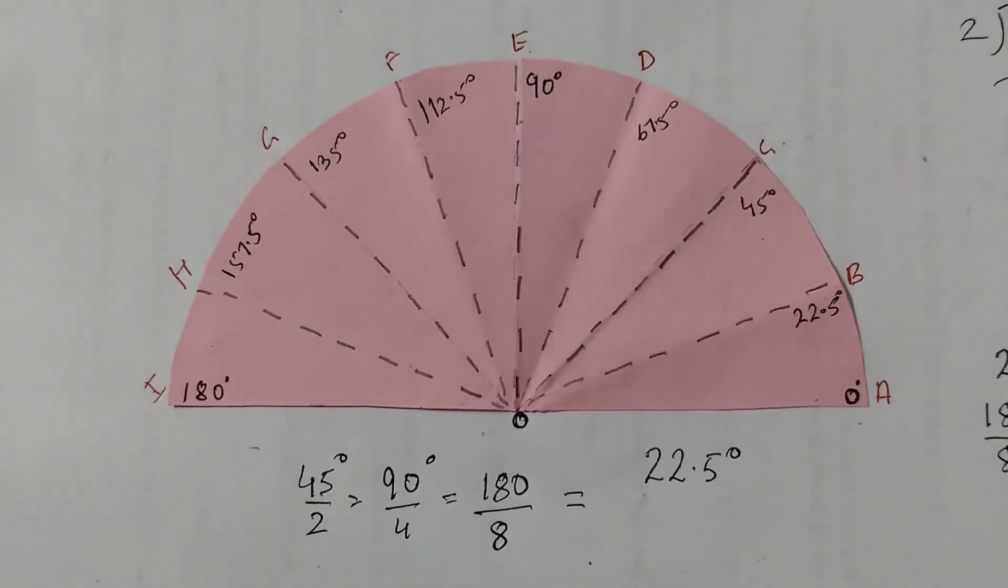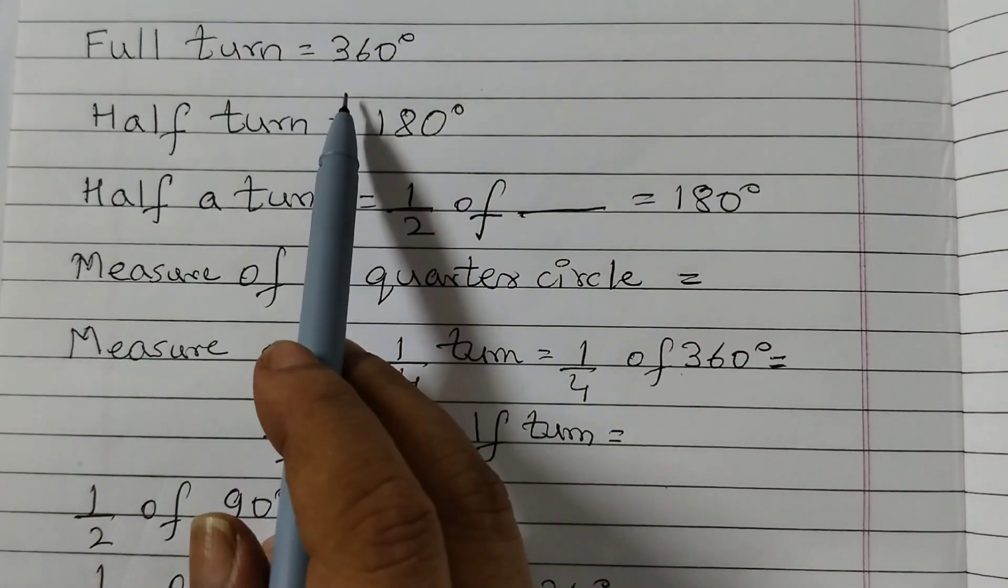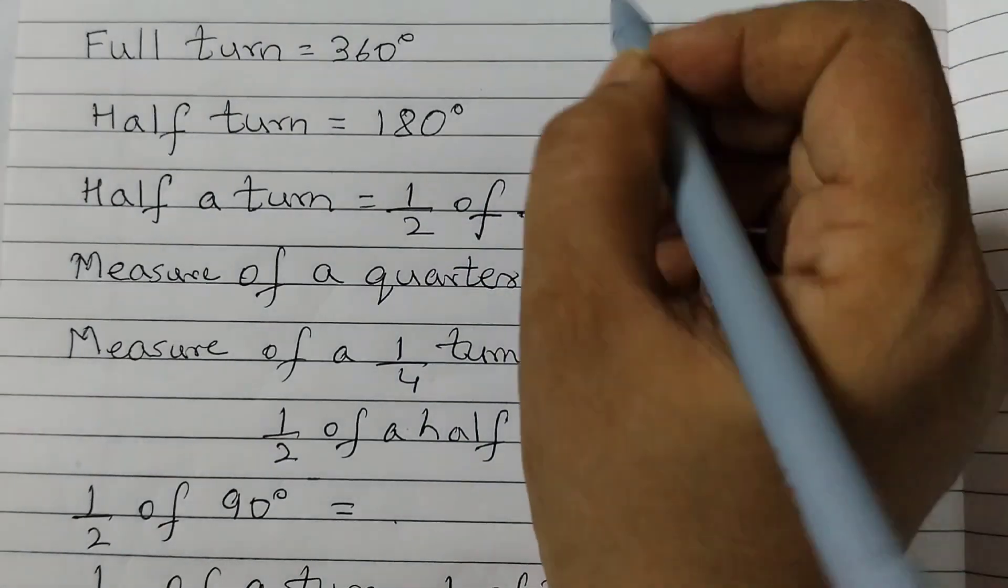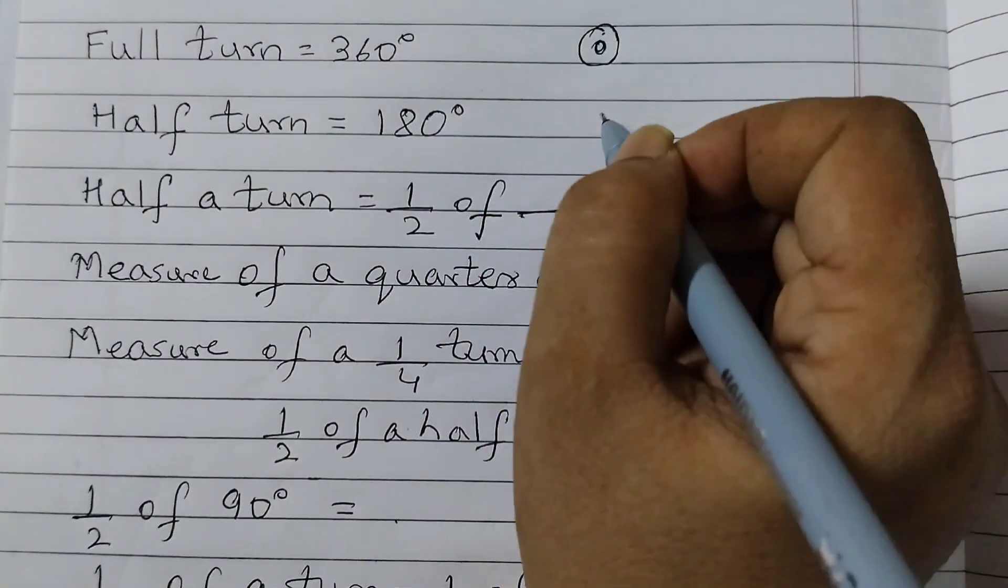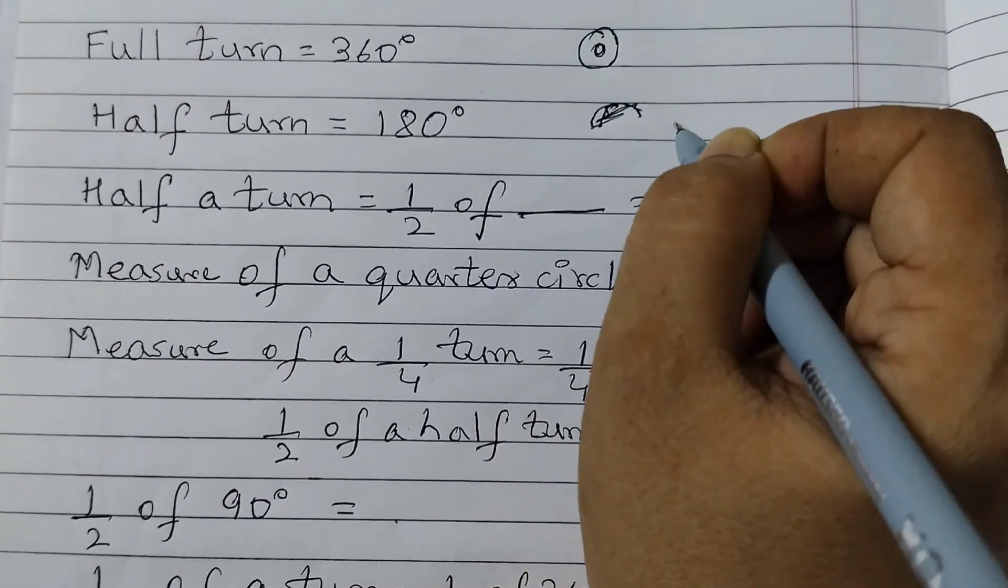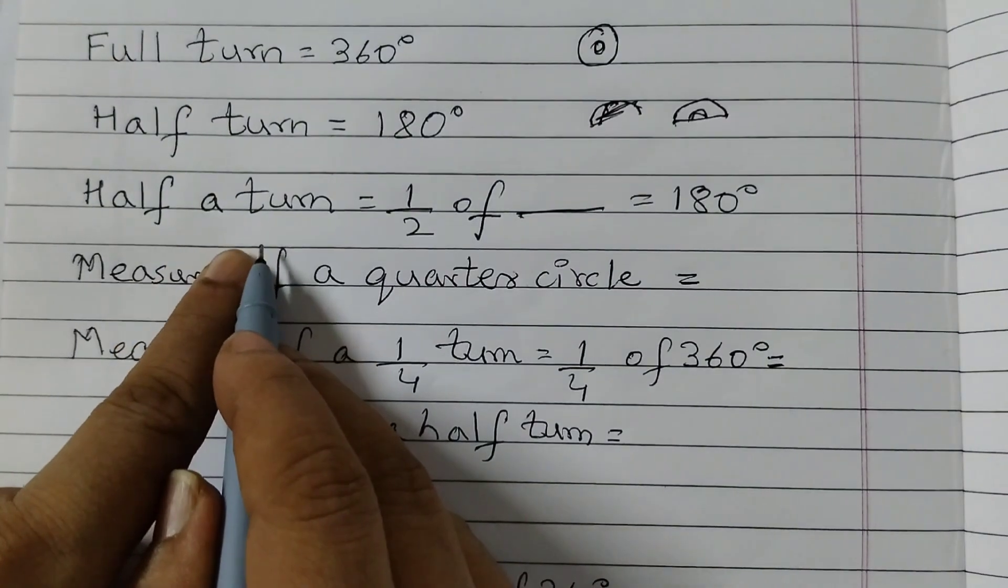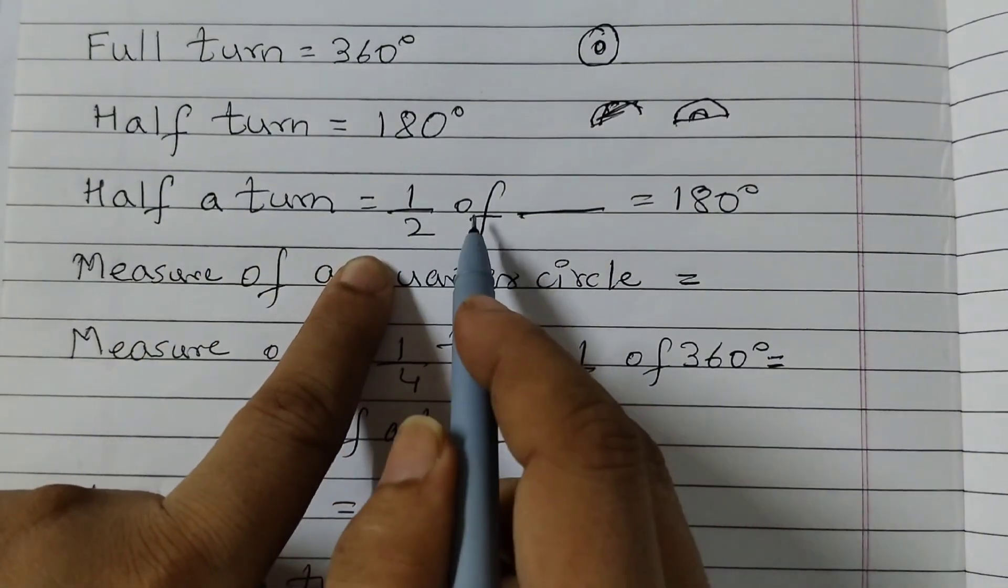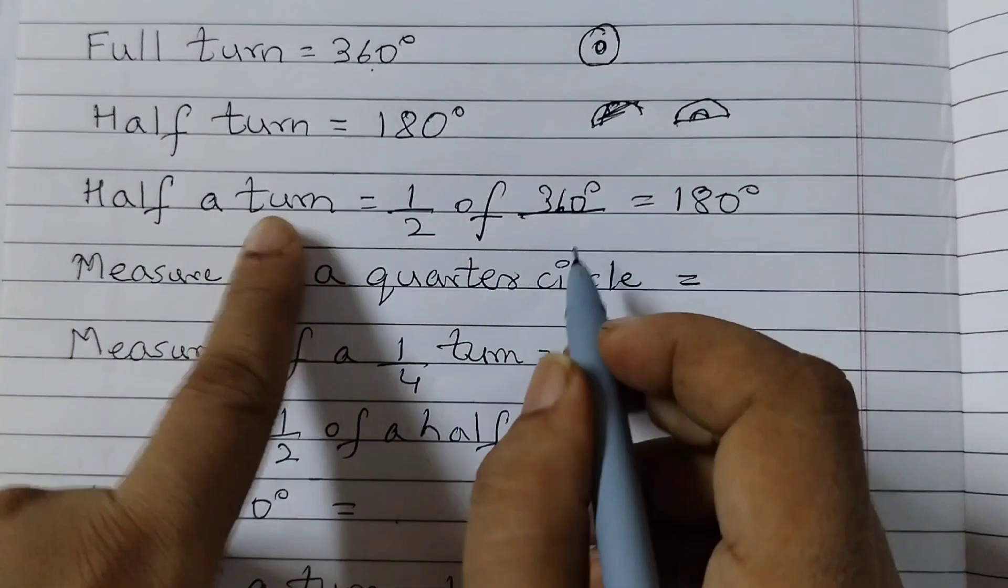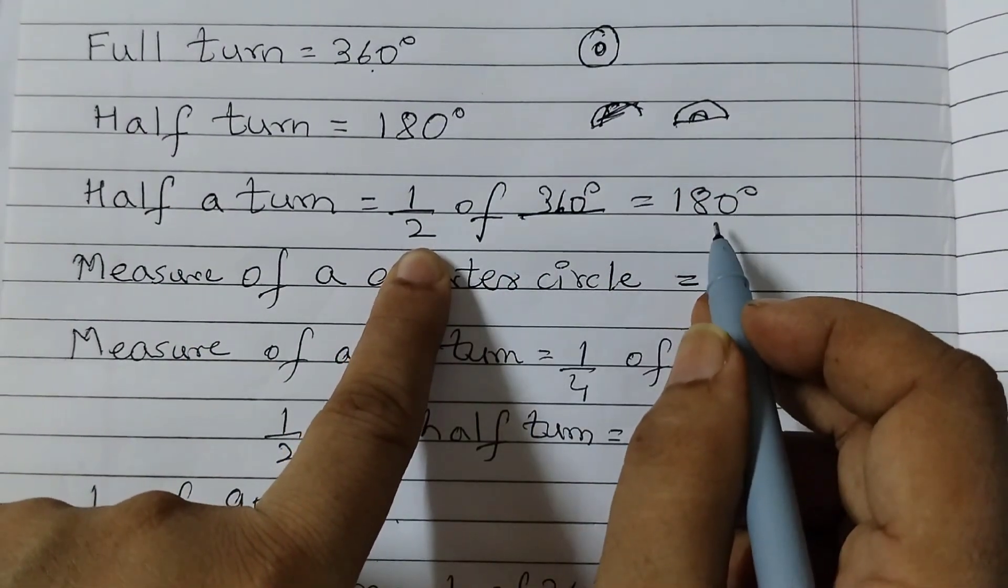Now from this activity you should be able to answer these questions. Full turn is equal to 360 degrees. Half turn is 180 degrees. Full turn is like this. Half turn is just a semicircle, like this. Half turn is equal to half of turn, which means 360 degrees. So 360 divided by 2 is 180 degrees.